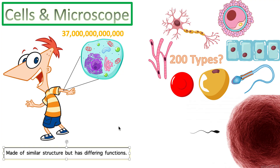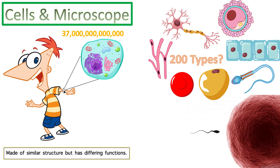Interestingly, our biggest cell is the egg cell, found in females, and our smallest cell is the sperm cell. So both of the two cells that create life are, respectively, the biggest and the smallest cells in the human body.